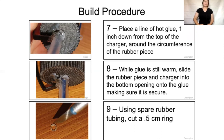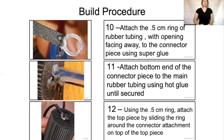This is going to be the base of our prototype. Procedure 8: while glue is still warm, slide the rubber piece and charging cable into the bottom opening of the bottom piece, ensuring a secure base for the top piece to move around freely. Procedure 9: using spare rubber tubing, cut a 0.5 centimeter ring to glue on top of the connector piece, in order to ensure that the top piece moves freely. Procedure 10: attach this 0.5 centimeter ring onto the connector piece with super glue — the rubber ring has a slit so it can be properly placed around the connector piece and the top piece.